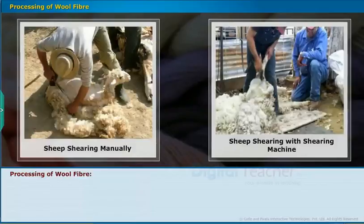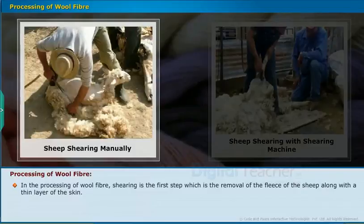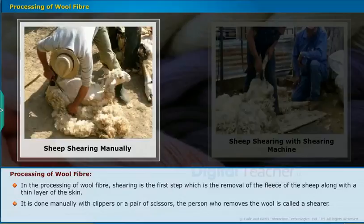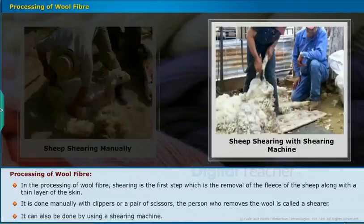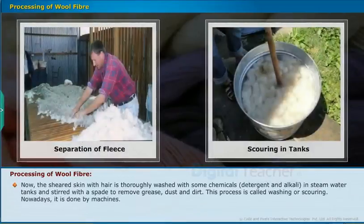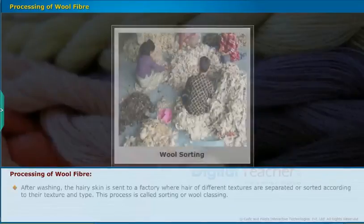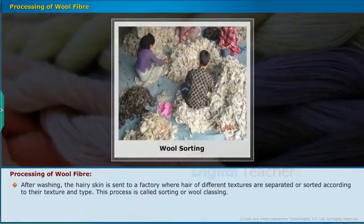In the processing of wool fiber, shearing is the first step — the removal of the fleece along with a thin layer of skin. It is done manually with clippers or a pair of scissors by a person called a shearer, or by using a shearing machine. The sheared skin with hair is then thoroughly washed with chemicals, detergent, and alkali in steam water tanks and stirred to remove grease, dust, and dirt. This process is called washing or scouring, and nowadays it is done by machines.